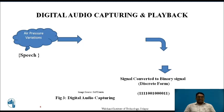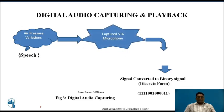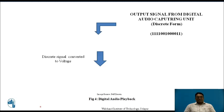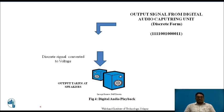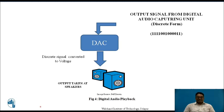So how is digital audio captured and played back? The speech, which is nothing but air pressure variations, is converted into digital. First, these are given to the microphone and converted into electrical signals. These electrical signals are then converted into digital signals, or binary signals, with the help of an ADC — analog to digital converter. These digital audio signals are regained back as sound on the speakers using a DAC, which takes the discrete binary signal, converts the digital signal into electrical, and these are given to the speakers which convert electrical signals into sound signals.